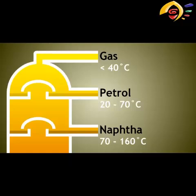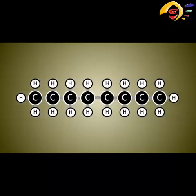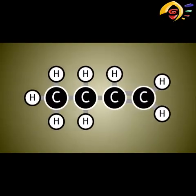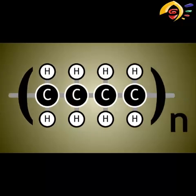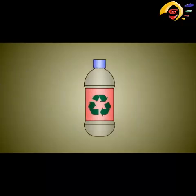Naphtha is not such a useful fuel, but it is a valuable source of organic molecules which can be cracked to make more fuels or form alkenes. Alkenes can be turned into polymers, and polymers can make plastics which are used in our everyday lives.